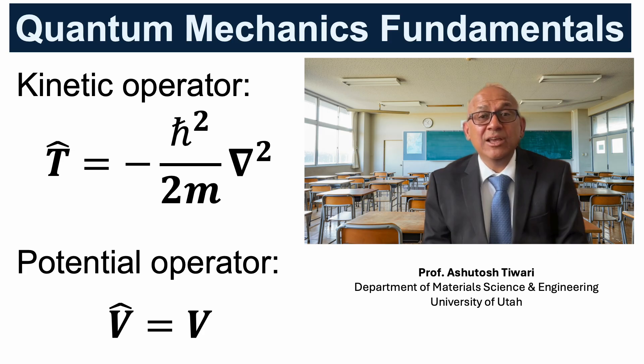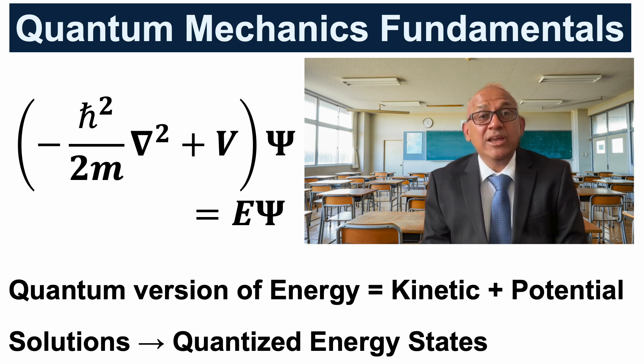Together, these describe all the possible energies in a quantum system. Substituting the kinetic and potential energy operators into the Hamiltonian, Schrödinger's equation takes the expanded form: -ℏ²/2m multiplied by the Laplacian plus potential energy V, all acting on ψ.